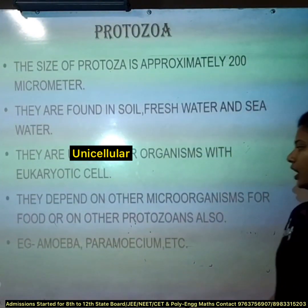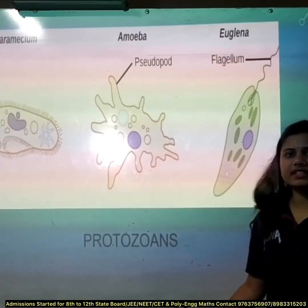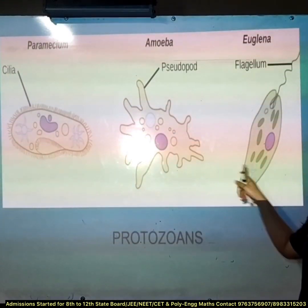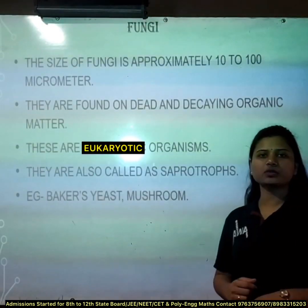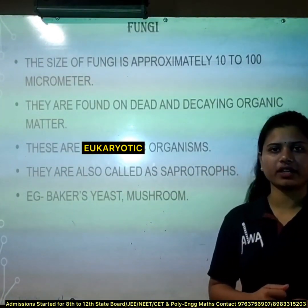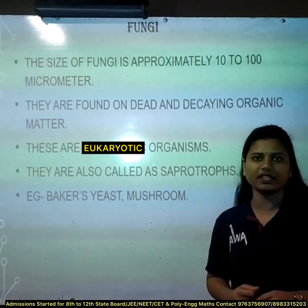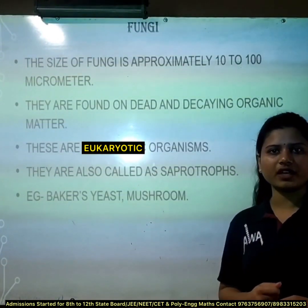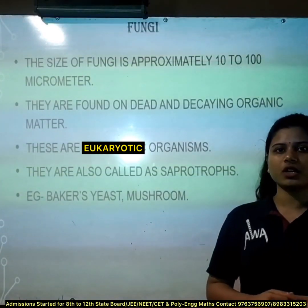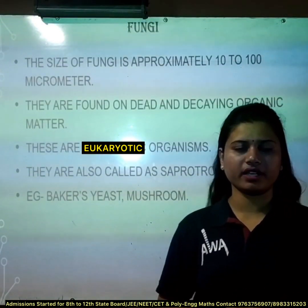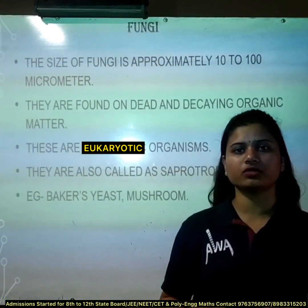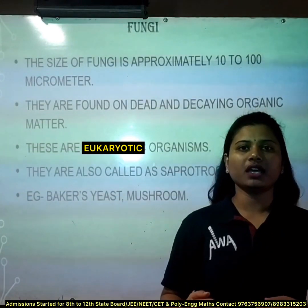Examples of protozoa are Amoeba and Paramecium. Our next microorganism is fungi. Fungi is the only microorganism which we can see with the help of a magnifying glass. The size of fungi is approximately 10 to 100 micrometers. They are found on dead or decaying organic matter — anything which was once alive, such as dead fruit, flowers, plants, or animals.